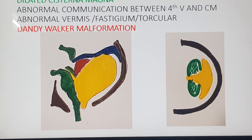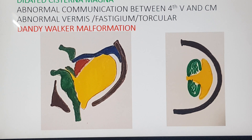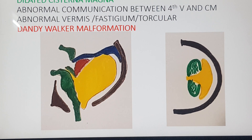We have a dilated cisterna magna and an abnormal communication between the fourth ventricle and cisterna magna. The vermis is abnormal, fastidium is abnormal, and the vermis is severely rotated posterosuperiorly. The brainstem-vermian angle is severely increased. Note that the brainstem-tentorial angle is also increased and the tentorium is elevated. This is Dandy Walker malformation.